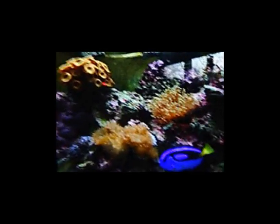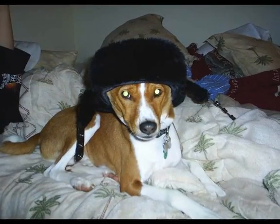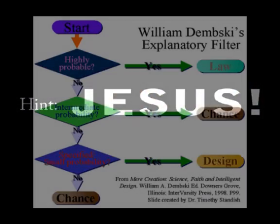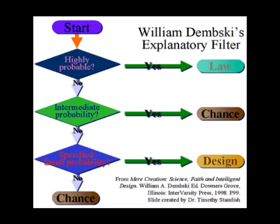Another fallacy creationists love is the argument from ignorance — saying, 'I don't know how a structure like the eye could have evolved, therefore God did it,' or 'scientists don't know how matter was created, so God did it.' Just because you don't know how something happened doesn't mean God did it. Three hundred years ago people didn't know what caused snowflakes — does that mean God makes snowflakes, and suddenly when we find out, he doesn't? It's a logical fallacy.